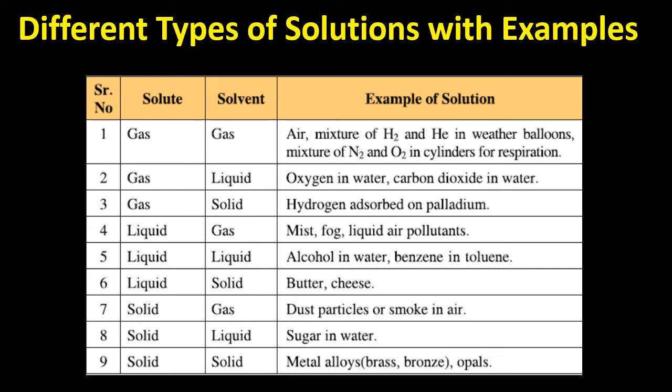Solid into gas: smoke in air. Solid into liquid: sugar in water. Solid into solid: metal alloys. These are used in artificial jewellery where two metals combine together to form wonderful ornaments. Brass and bronze are metals that combine together to form different ornaments.